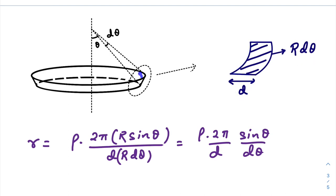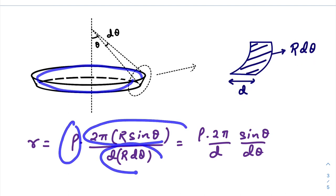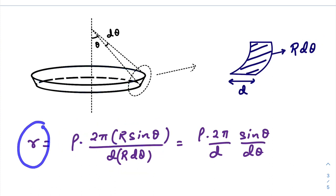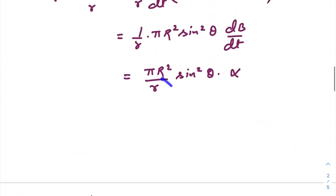And the length of that rectangle would be R d theta. So area of cross section will be d times R d theta. So the resistance of this circular portion would be rho times the circumference divided by the cross sectional area, that is d times R d theta.